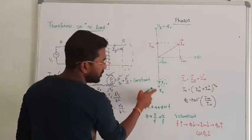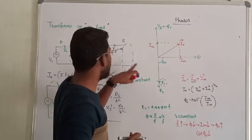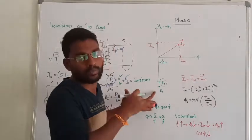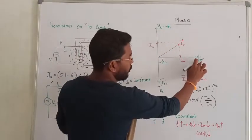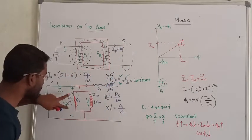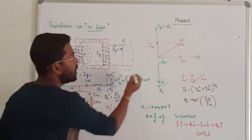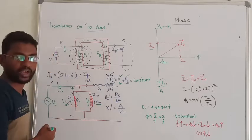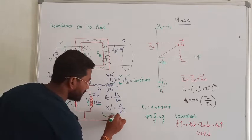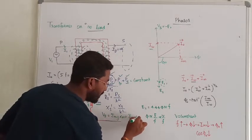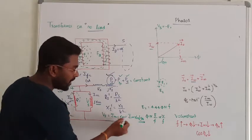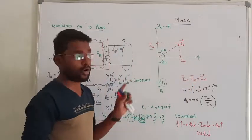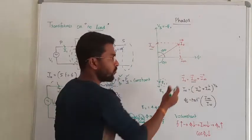The induced EMF on the primary side and induced EMF on the secondary side are in phase. Assuming this is a step-up transformer, the secondary voltage is greater than the primary voltage. The magnetizing reactance is j times XM, so we can write Vs = IM × j·XM, or in polar form, IM·XM at an angle of 90 degrees. This means supply voltage is 90 degrees leading from the magnetizing current. The magnetizing current is responsible for producing the flux, so flux and magnetizing current are in phase.